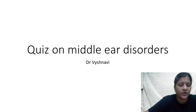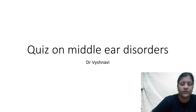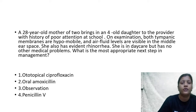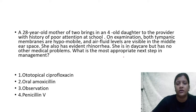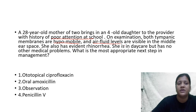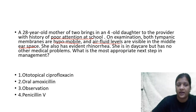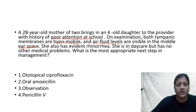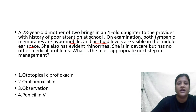A 28-year-old mother of two brings in a four-year-old daughter with a history of poor attention in school. On examination, both tympanic membranes are hypomobile and there is an air-fluid level visible in the middle ear space. She also has evident rhinorrhea. She is in daycare but has no other medical problems. What is the most appropriate next step in management: ototopical ciprofloxacin, oral amoxicillin, observation, or penicillin?